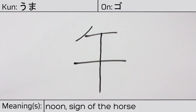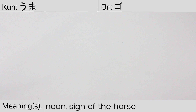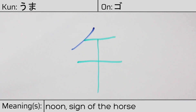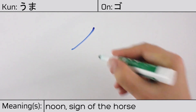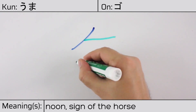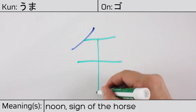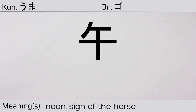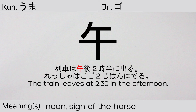This character is made up of the following radicals or parts: katakana no, kanji ichi or one, and the kanji ten or jiu. You can remember this kanji by the following hint: when many people gather for lunch. Our example sentence is: 列車は午後2時半に出る — The train leaves at 2:30 in the afternoon.